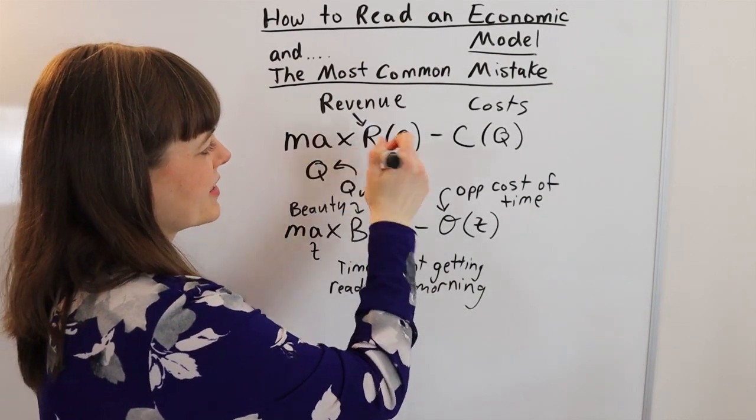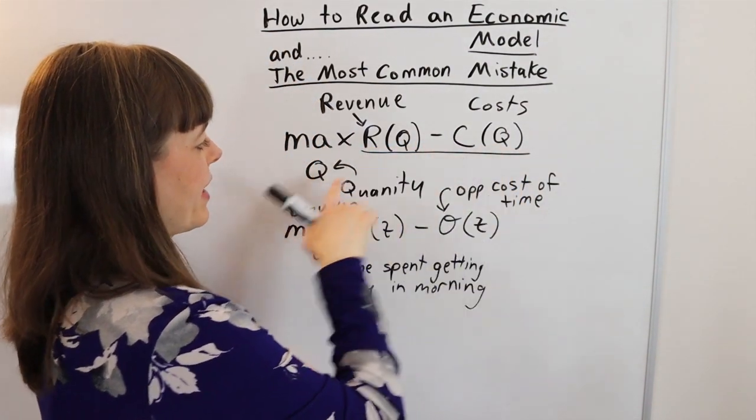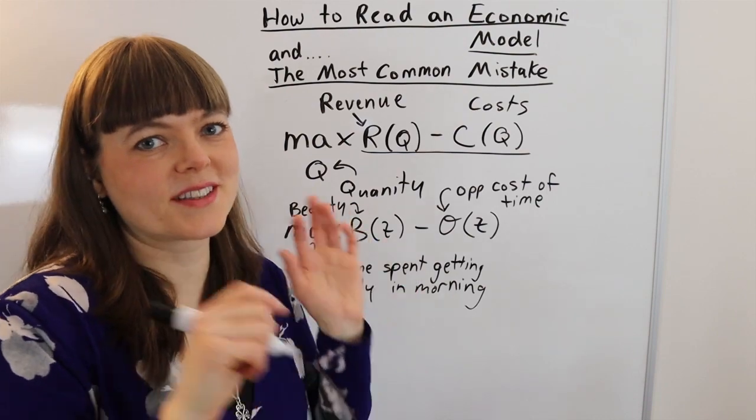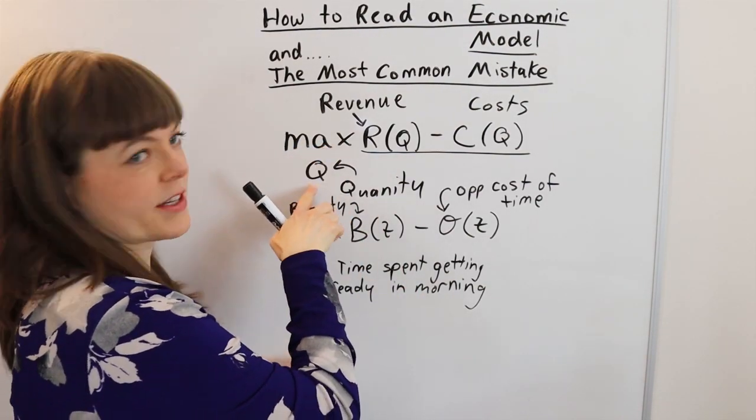So how do you read an economic model? You read it by saying you want to maximize the objective function, which is this part, by choosing the choice variable. And of course, the common mistake is that students will read this as maximizing the choice variable.